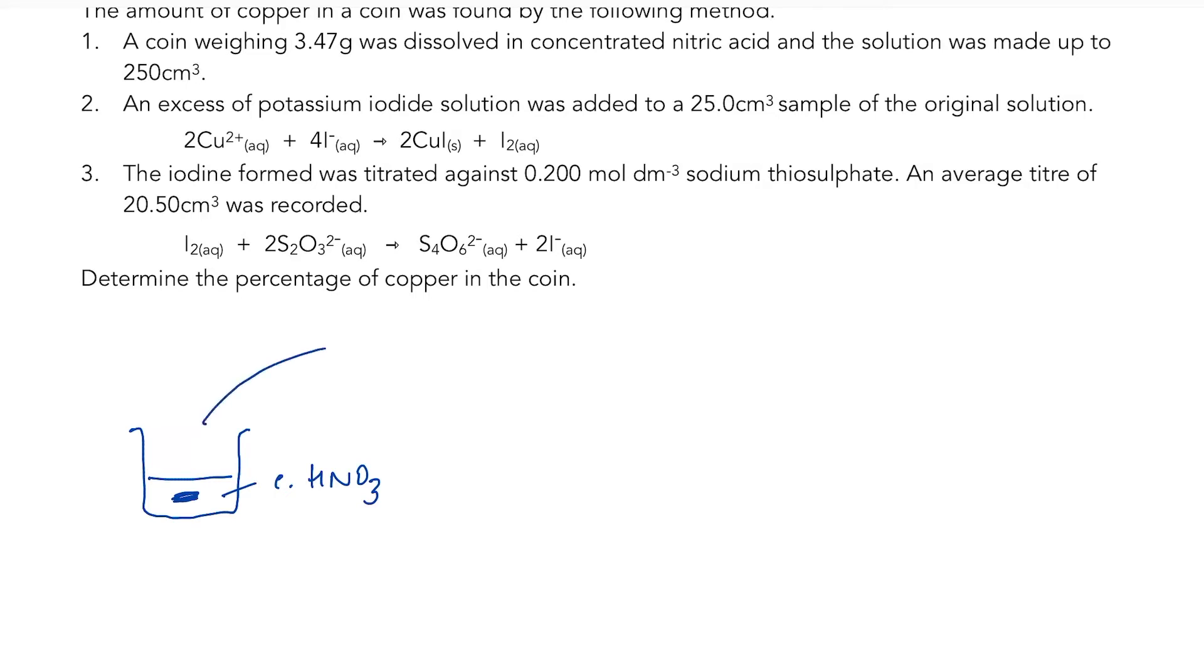My concentrated nitric acid will have oxidised the copper in that coin to copper 2+. Once it's all dissolved, they will have taken all of that solution, and it said it was made up to 250 centimetres cubed. So we know that that means it was placed in a volumetric flask and made up to the mark with distilled water. And now I know I have 250 centimetres cubed of solution. So all the copper that was in the coin is now in my volumetric flask.